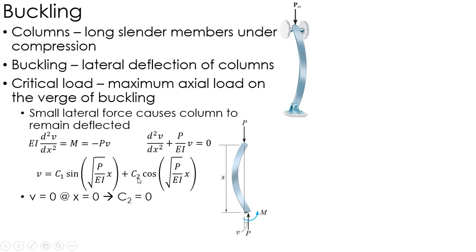When I do that, I find that C2 equals 0 because the sine of 0 is 0, so C2 has to equal 0. I do the same thing at X equals L where it's also pinned, so the deflection is 0 there. Now I get C1 sine of this times L. C1 could be 0, but that's trivial.